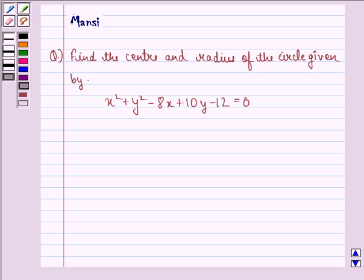Hello and welcome to the session. My name is Mansi and I am going to help you with the following question. The question says find the center and radius of the circle given by x squared plus y squared minus 8x plus 10y minus 12 equal to 0.